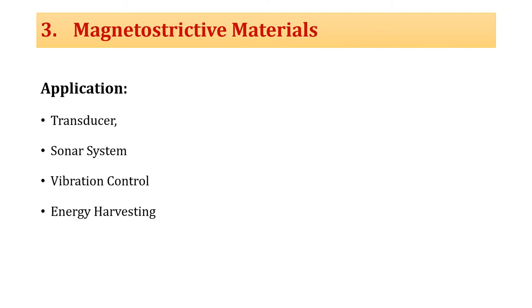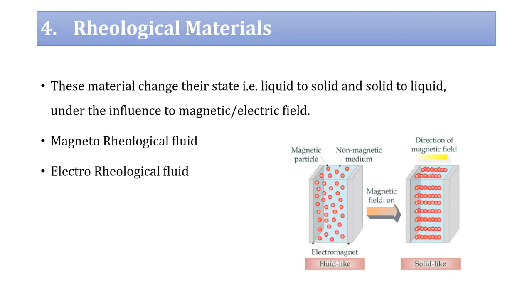Magnetostrictive materials have applications in transducers, sonar systems, vibration control, and energy harvesting systems. The next type of smart material is rheological materials. Rheological materials are fluid-type materials that change state from liquid to solid or solid to liquid under the influence of a magnetic or electric field. The material that changes state under a magnetic field is known as magnetorheological fluid, and the material that changes state under an electric field is known as electrorheological fluid.